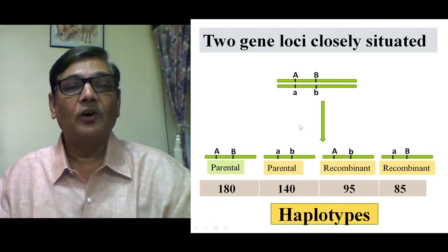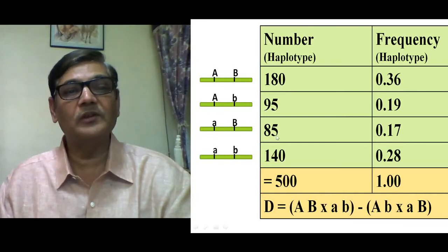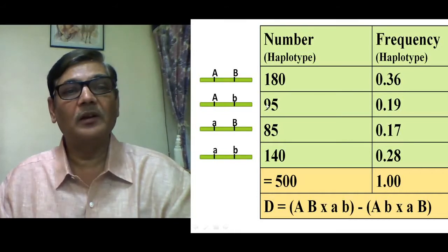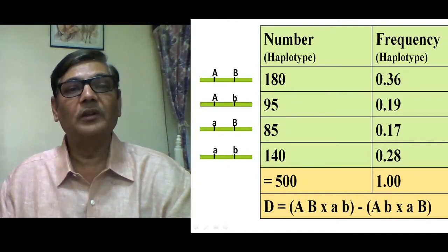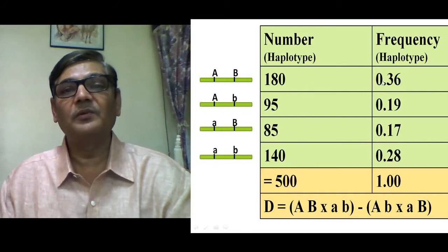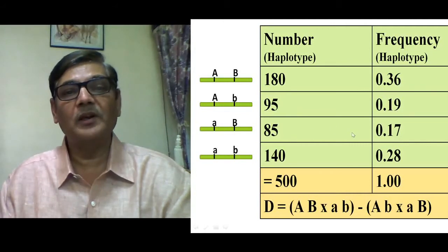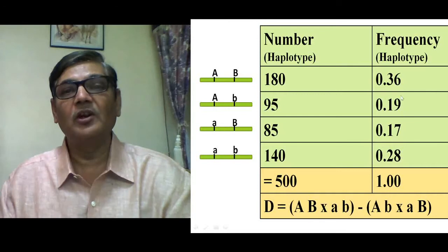From 500 individuals, we know: capital A capital B = 180, capital A small b = 95, small a capital B = 85, small a small b = 140. These four types are actually haplotypes, with parental types more frequent and recombinant types less frequent. We can calculate their frequencies: 180/500 = 0.36, 95/500 = 0.19, 85/500 = 0.17, and 140/500 = 0.28.